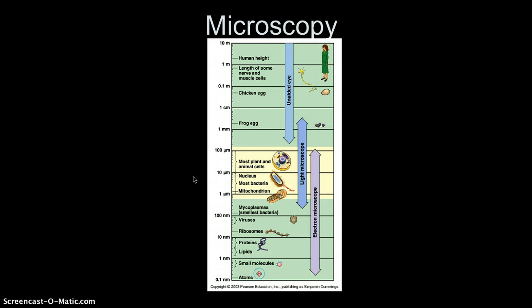If you look at the chart, you see that between 1 and 10 micrometers you have the nucleus, most bacteria, and the mitochondria. Between 10 and 100 micrometers, you have most plant and animal cells. With the light microscope you can see a frog egg, a chicken egg, and the length of some nerve and muscle cells. But most of our understanding of intricate cell parts and cell structures has come about with the use of the electron microscope.